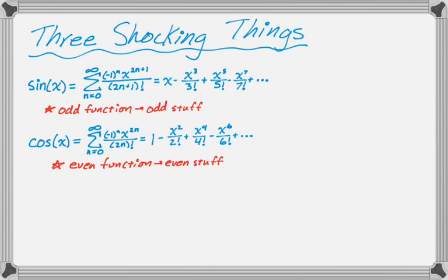The third shocking thing that we need is e to the x. So e to the x can also be written as a summation. e to the x is not even or odd, but e to the x actually probably has the easiest of all of them to memorize. It's just the sum from 0 to infinity of x to the n over n factorial. So it's actually really easy. So that's 1 plus x plus x squared over 2 factorial plus x cubed over 3 factorial. It just has everything. So all the evens, all the odds, just everything showing up.